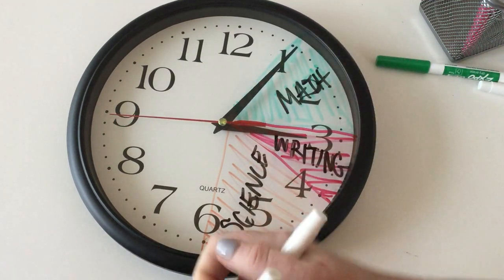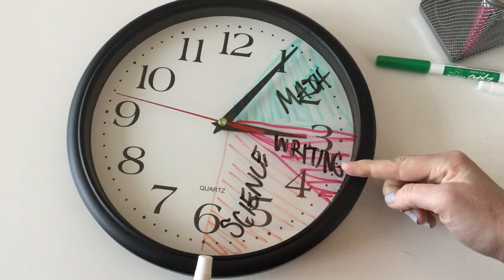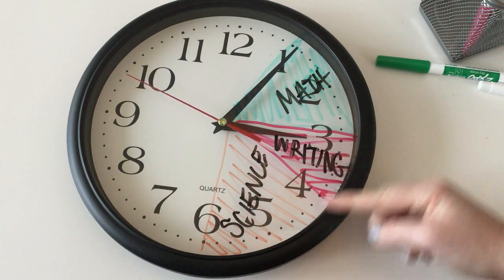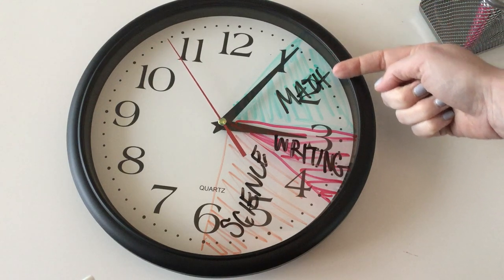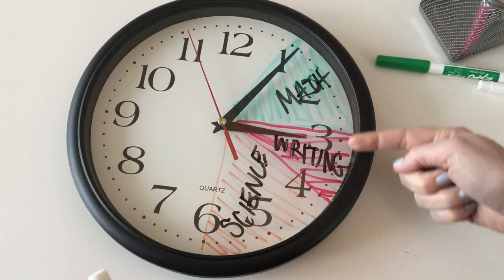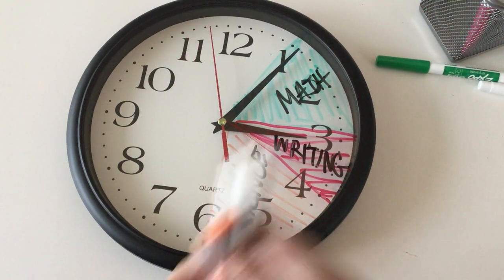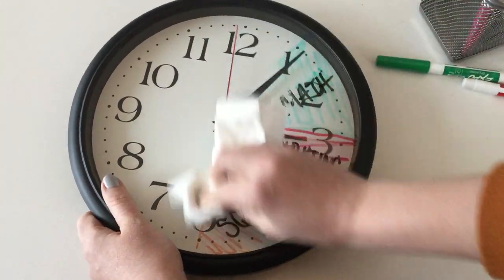This is a nice way to keep on track the whole time. If we're still working on math midway through here, we know we're running late and we're not going to accomplish everything. So as that minute hand goes through each section, we can track how long we should be working. This erases really easily with a tissue.